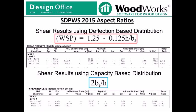This slide shows the shear capacity of the shear line when deflection and capacity-based distribution are used. When deflection-based distribution is utilized, the aspect ratio factor is 0.82, resulting in a capacity of 214 PLF for segment 1-3. This 214 PLF multiplied by the actual length of 2.3 feet results in a total allowable shear of 498 pounds for the segment. When capacity-based distribution is utilized, the aspect ratio factor is 0.58, resulting in an allowable shear capacity of 152 PLF for segment 1-3. Multiplying 152 by 2.3 feet gives 354 pounds as the capacity of the segment.